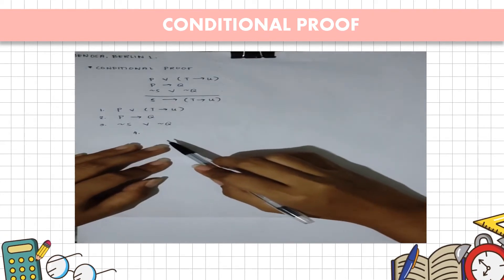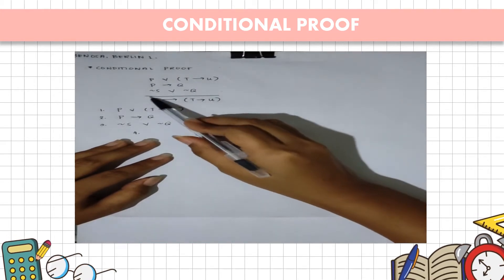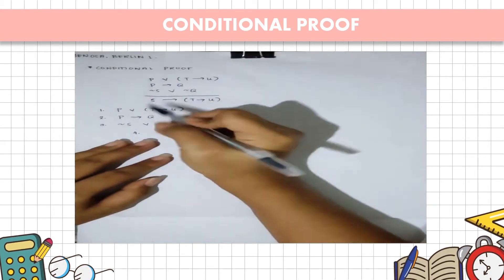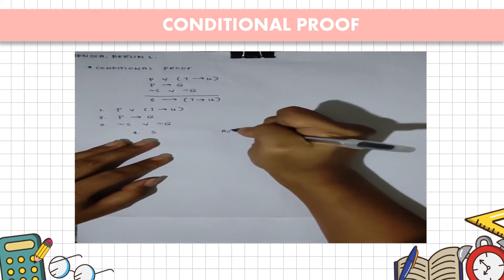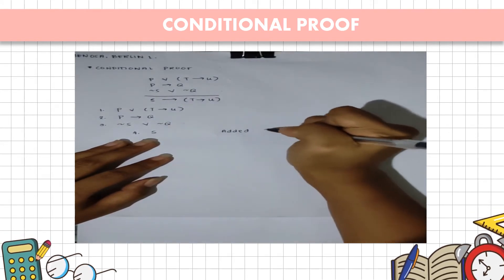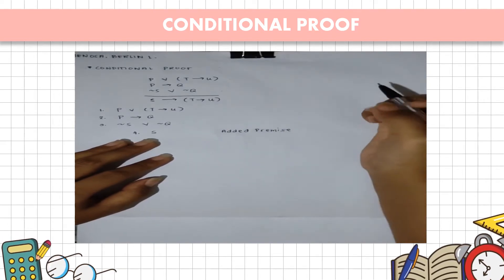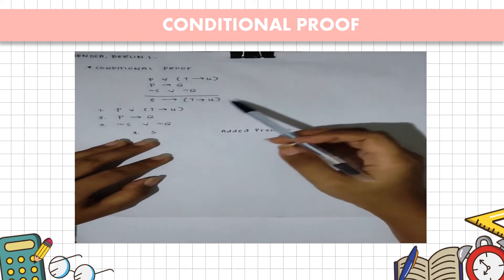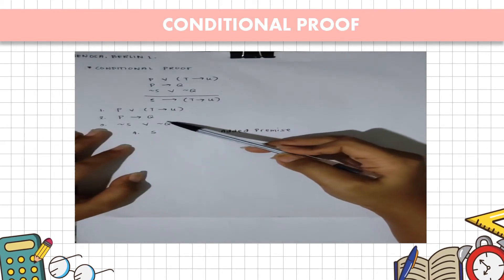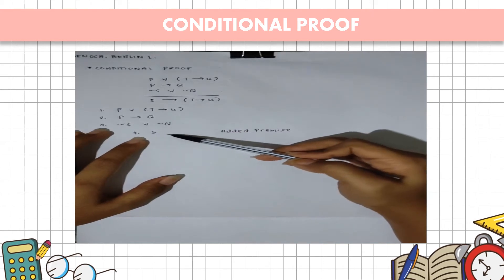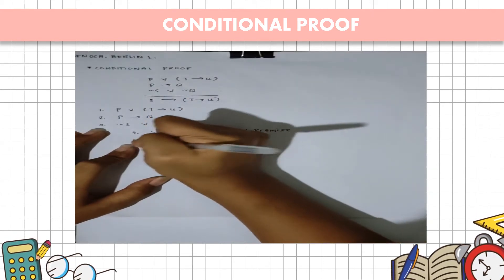We begin the conditional proof by assuming that the antecedent S is true. We list it as our added premise. Then, using disjunctive syllogism on premise 3 and premise 4 (the added premise), we get not Q.